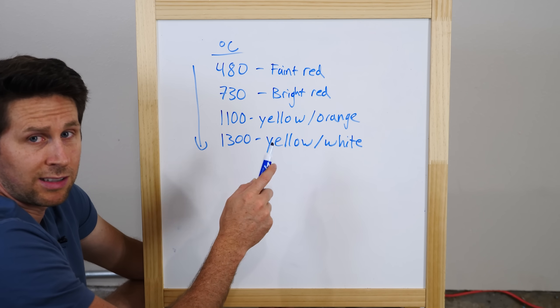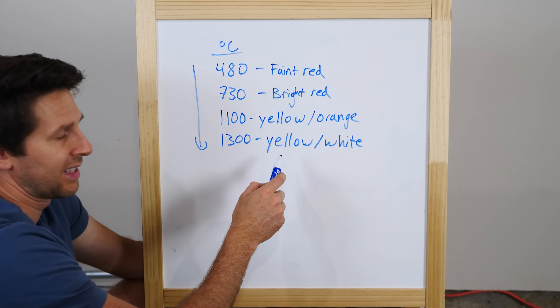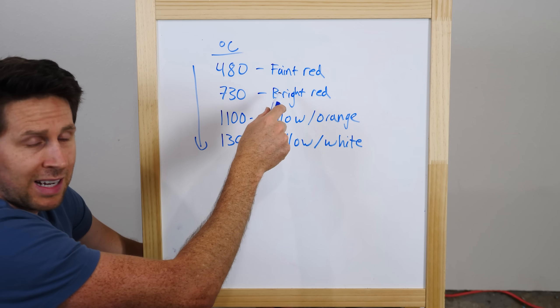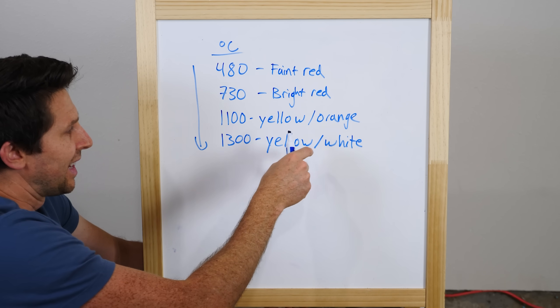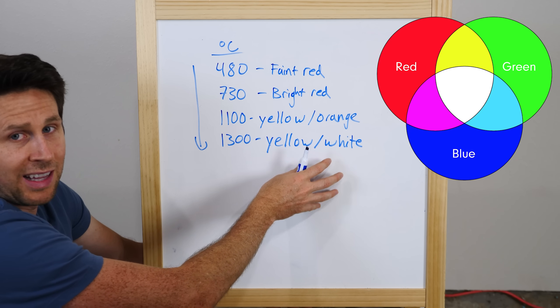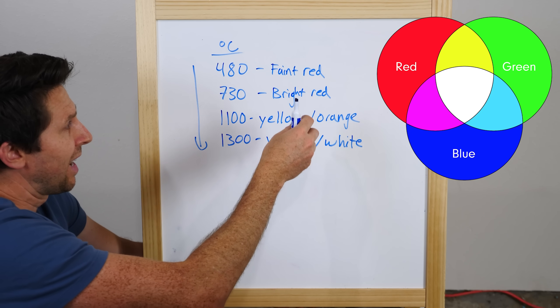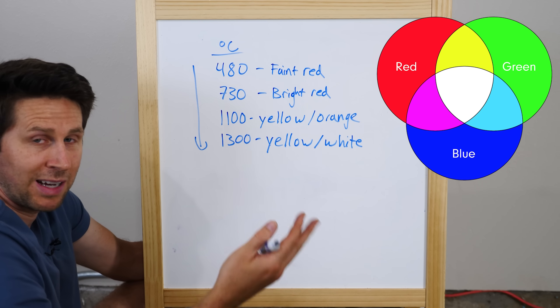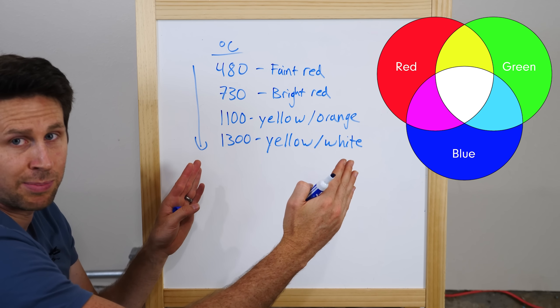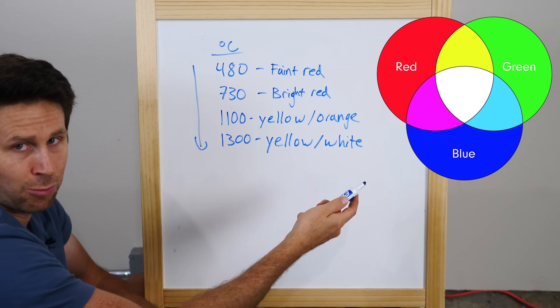And the reason it starts glowing white at 1300 degrees Celsius is because you have red light, but then you added the medium range light, the mid frequency light, and then you added the high frequency light like blue light in there. So when you have the low, medium, and high frequency light all together, that makes white light. You basically have the entire visible spectrum being emitted, and so it looks white.